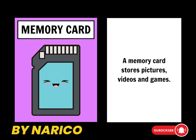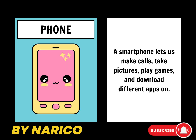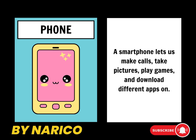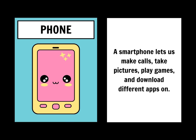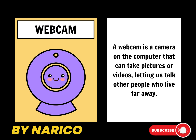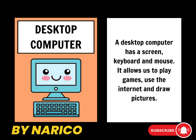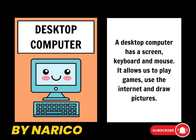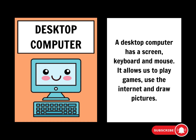A memory card stores pictures, videos, and games. A smartphone lets us make calls, take pictures, play games, and download different apps. A webcam is a camera on the computer that can take pictures or videos, letting us talk to other people who live far away. A desktop computer has a screen, keyboard, and mouse. It allows us to play games, use the internet, and draw pictures.